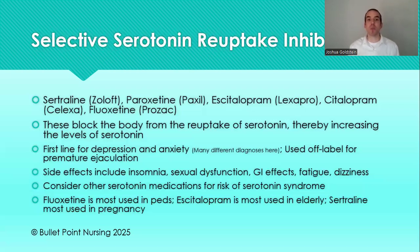These are the first-line drugs for depression and anxiety. Remember, especially for APRN school, there are many different anxiety diagnoses they can be used for, such as generalized anxiety disorder, social phobias, and PTSD. There is also an off-label use — premature ejaculation. One of the side effects of this drug is that it takes longer to have an orgasm, which in men is a treatment for premature ejaculation.